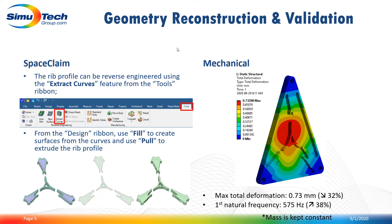The optimized faceted geometry was sent to ANSYS SpaceClaim for geometry reconstruction, and with a few mouse clicks we were able to recreate a solid geometry ready to simulate using the same boundary conditions as the initial design. The results show that the maximum total deformation decreased by 32% compared to the initial design, and we were also able to increase the first natural frequency by 38% — all using the same amount of material, just better distributed.